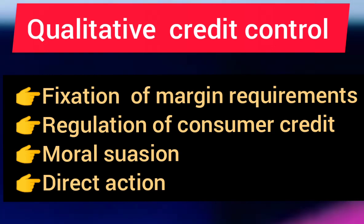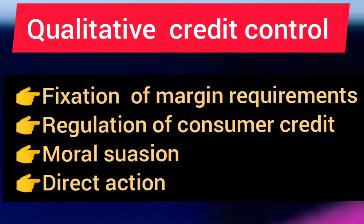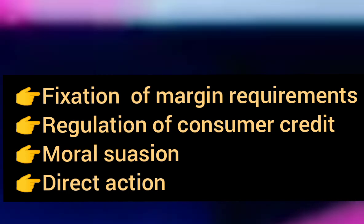Next, regulation of consumer credit. If you have consumer durable goods, you can regulate the demand and maintain economic stability. This is a regulation of consumer credit. In this method, there are rules for the minimum down payment and the loan duration.